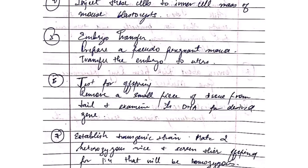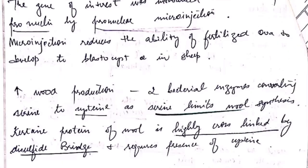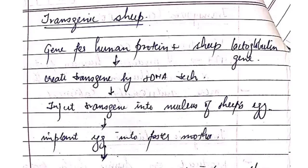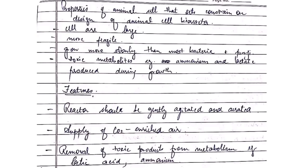The next animal is transgenic sheep. The gene of interest is injected using microinjection and it helps in increasing wool production. The gene for human protein is mixed with the sheep beta-lactoglobulin gene. This gives a transgenic sheep by recombinant DNA technology. The gene is injected into the nucleus of the sheep's egg, then implanted into the egg of a foster mother. The human protein then secretes into milk, and fractionating the milk protein gives pure human protein.